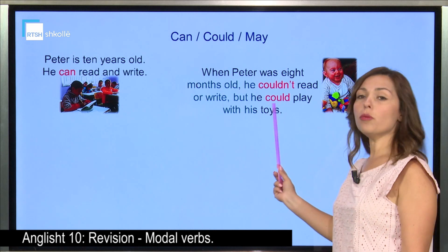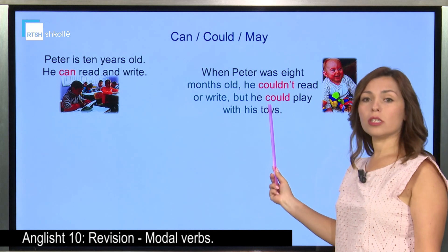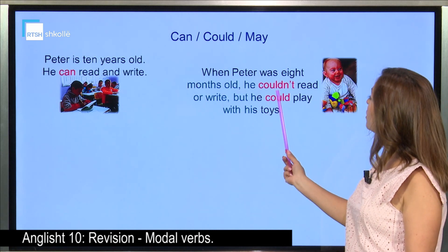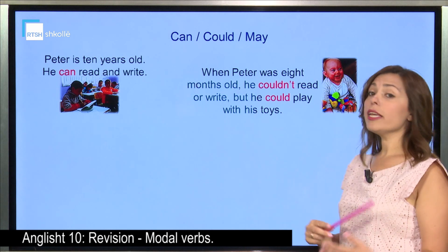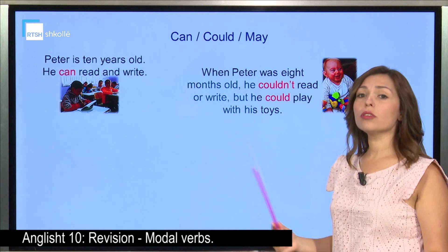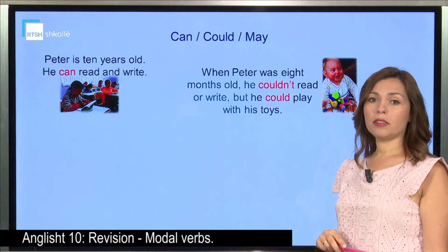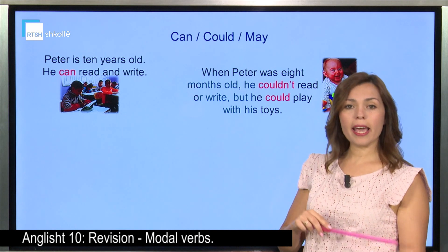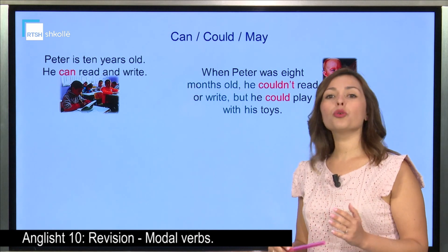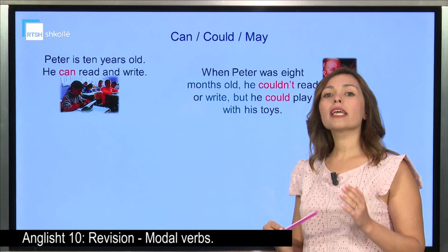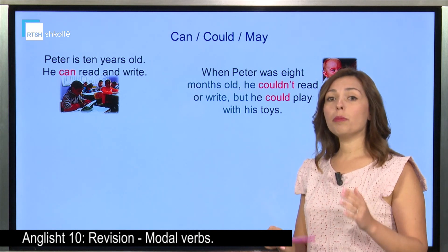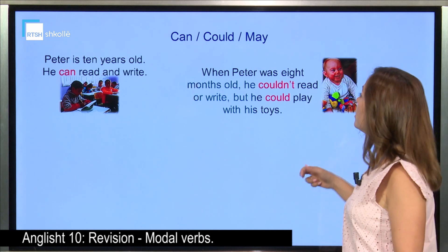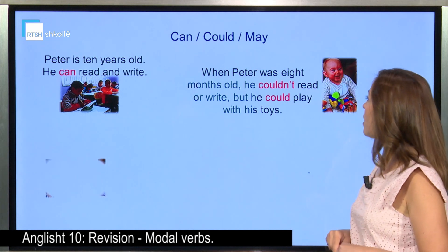Affirmative form — positive — he could do. Negative form — he couldn't read. So we have the basic difference between can and could. Can: ability in the present. Could: ability in the past.